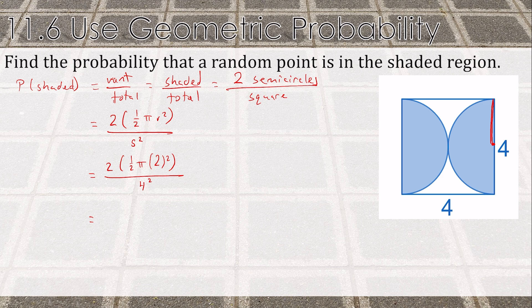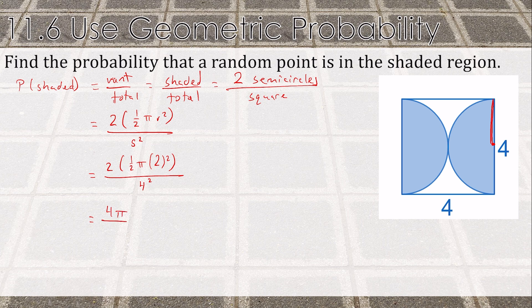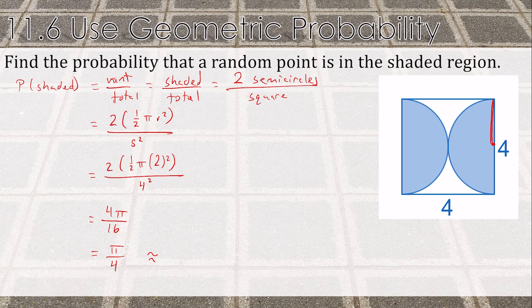So 2 times a half, which is 1 times π, times 2 squared, which is 4. So I have 4π on top and 16 on the bottom. That reduces to π over 4, or about 78.5%.